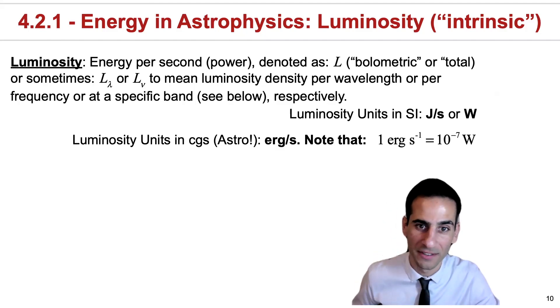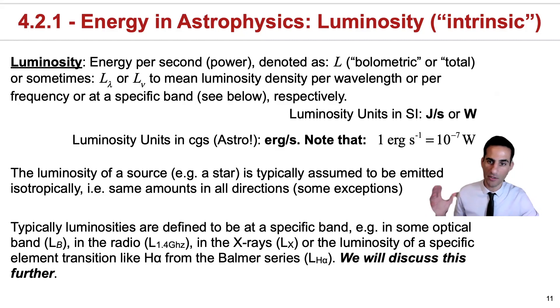But in most situations, we're actually going to assume that the luminosity of a source, for example a star, is typically emitted isotropically. And this means that it is emitted in the same amounts in all directions. Typically we use this assumption when we can only see energy from a given direction and then we want to retrieve the full energy per second, the full power or luminosity of the source.